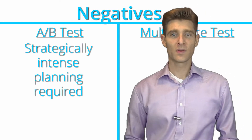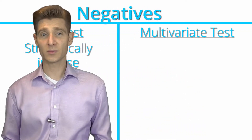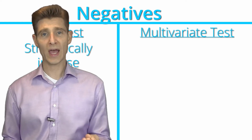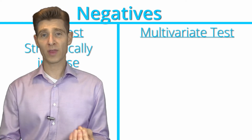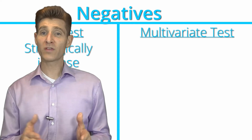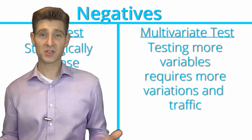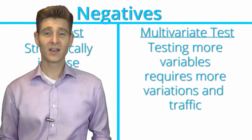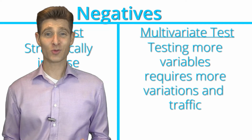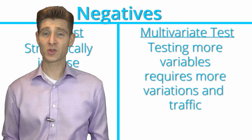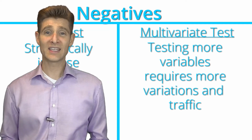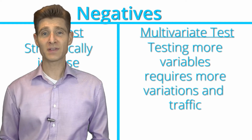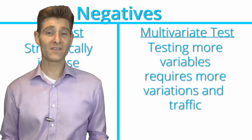The cons of multivariate testing are more simplistic. For every variable you add, you have to add that as a variation to control for that variable. The more variables you add, the more experiences you need, and the more experiences you have, the more traffic you need to get the data. The biggest con of multivariate testing is it requires a lot of traffic — especially with full factorial testing — and most sites and pages don't have that amount of traffic to make multivariate testing feasible.